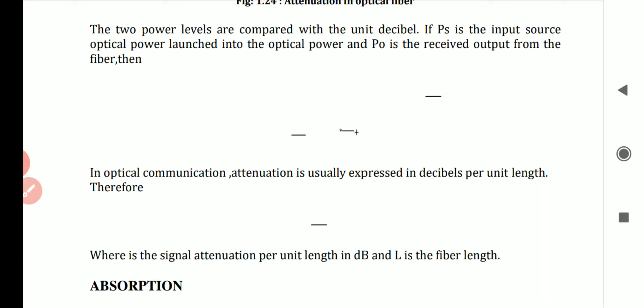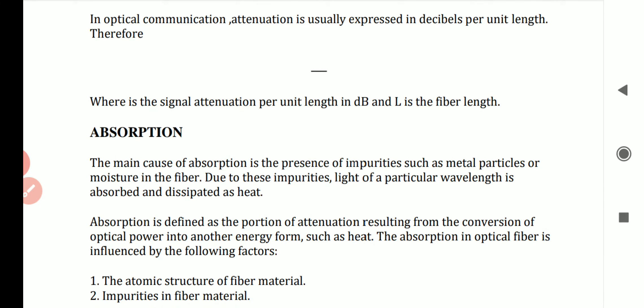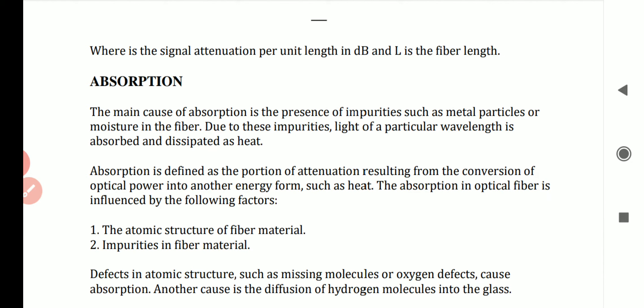Next is absorption. Absorption means the material absorbs energy from some substance. Absorption loss is related to material composition and the fabrication process of the fiber. The material composition — plastic fiber versus glass fiber — is important. Absorption is caused by three different mechanisms.